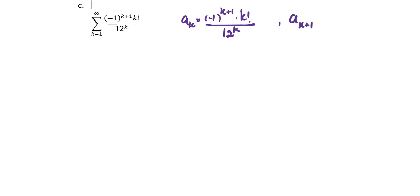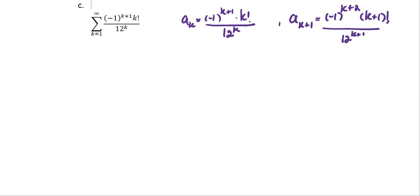We find the a_{k+1} term in the form of negative 1 to the power k plus 2 multiplied by k plus 1 factorial divided by 12 to the power k plus 1. To find the ratio r, we take the limit as k approaches infinity and put the absolute value for the ratio of a_{k+1} over a_k, because the terms alternate from positive to negative.